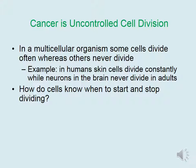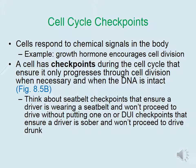In a multicellular organism, some cells divide often whereas others never divide. For example, in humans, skin cells divide constantly while neurons in the brain never divide in adults. So how do cells know when to start and stop dividing? Cells respond to chemical signals in the body that determine whether or not the cell should divide — for example, growth hormone encourages cell division.